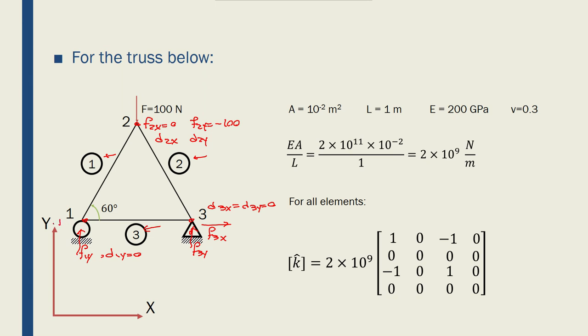And here, I know that d1y is equal to 0 because it can't move in the y direction. But I don't know d1x. What I know is that f1x is equal to 0, the boundary conditions. And then I found these EA over L.